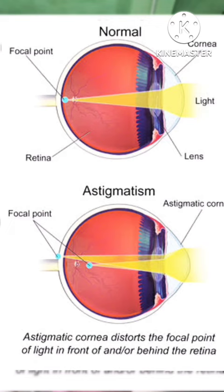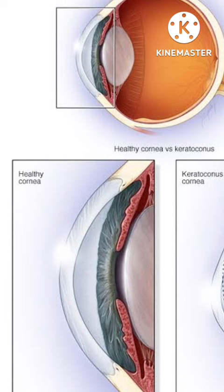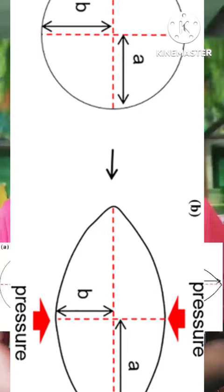First we need to know what astigmatism is. Astigmatism is a condition where the parallel beam of light rays incident on the cornea, after refraction, are not focused to form a point image near or on the retina — rather it forms different focal lines. It can occur due to changes in your corneal curvature as well as changes in your lenticular curvature.